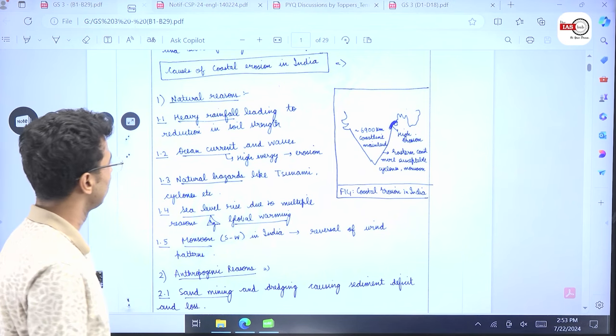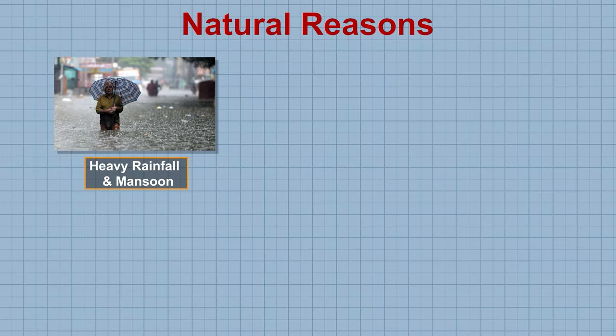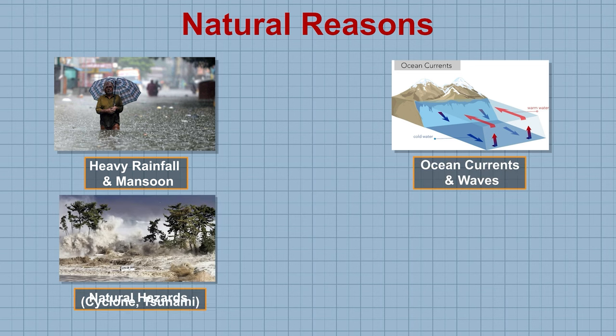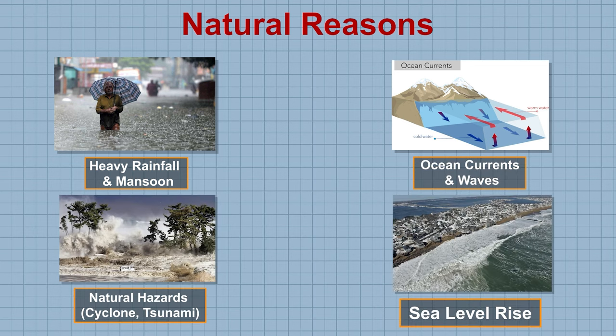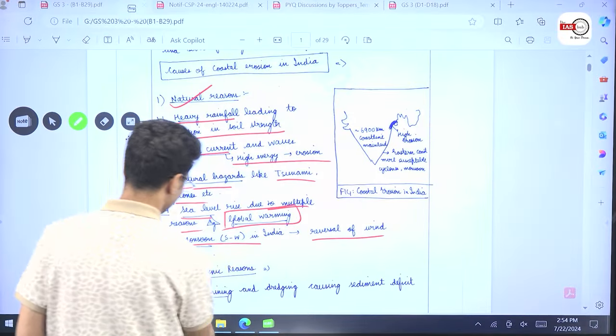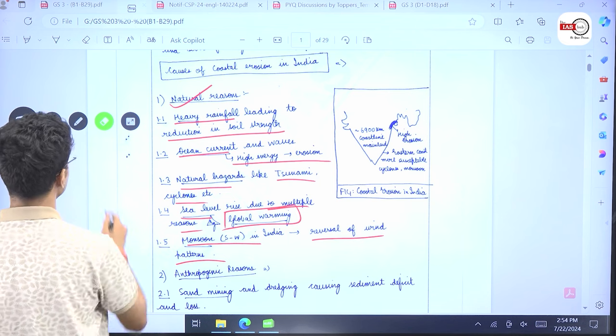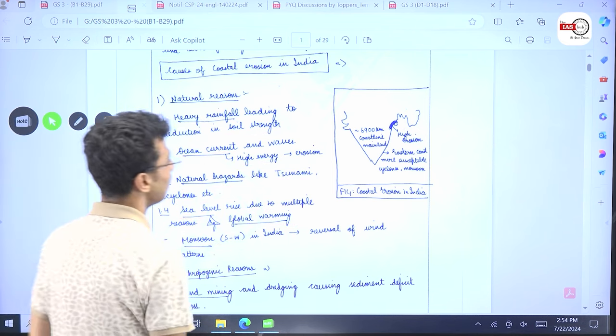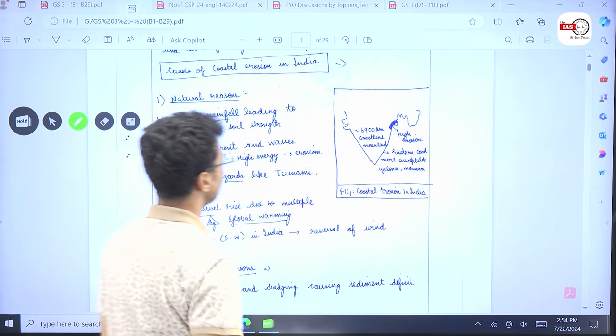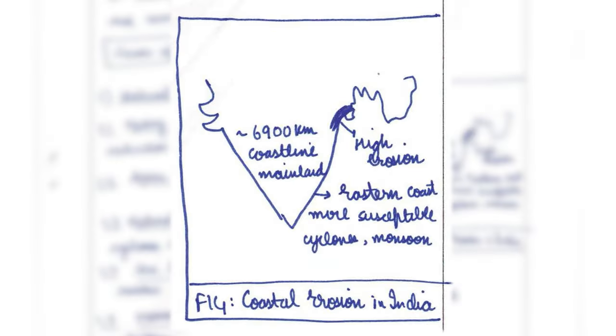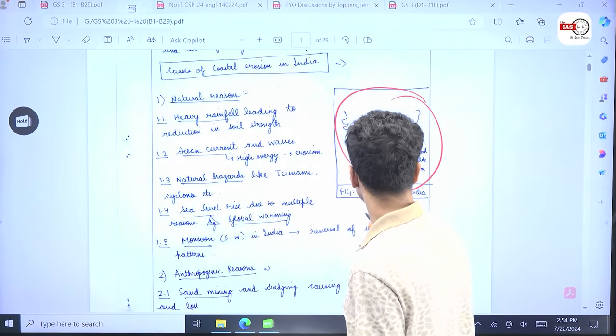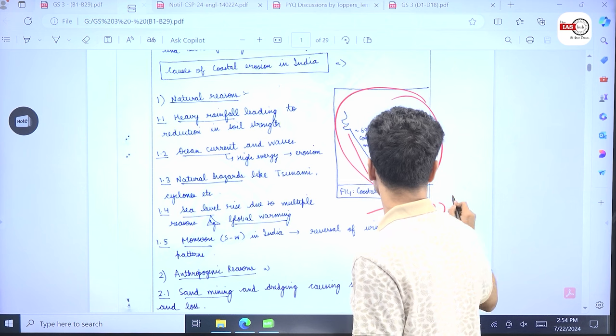Number one, causes of coastal erosion. Natural reasons are there. Heavy rainfall leading to reduction in soil strength. Ocean currents. Natural hazards like tsunami, cyclone. Sea level rise due to multiple reasons of which global warming is one of the major reasons. Then, monsoon. Reversal of wind pattern. So, these are some of the natural reasons of coastal erosion. We can always draw this diagram. Highlighting the peninsular India. We have a coastal length of almost 7500 kilometers.